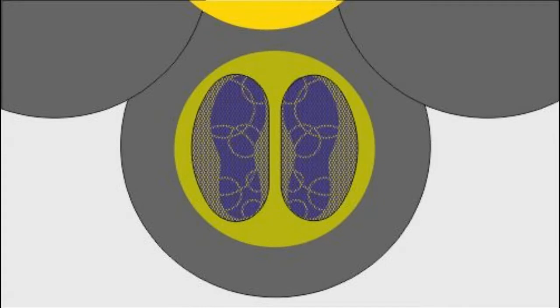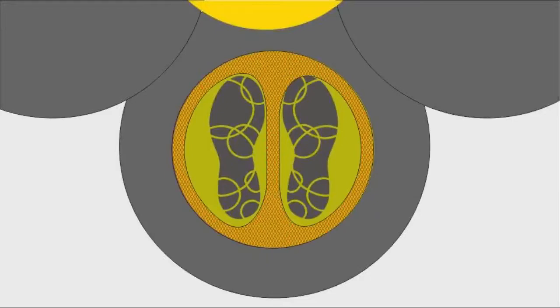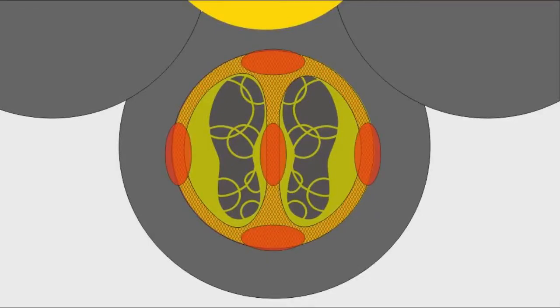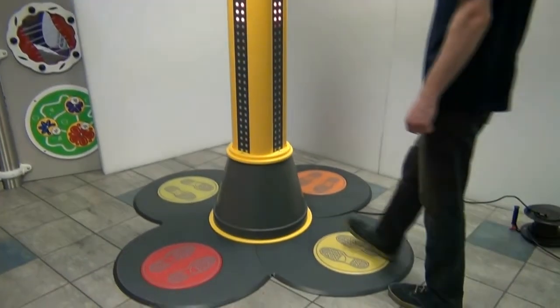The stomp mats have two active switch areas as shown. The perimeter and a section down the center of the mat is not active. If you tread on these areas, nothing will happen. Step onto any of the stomp mats to initiate the game.